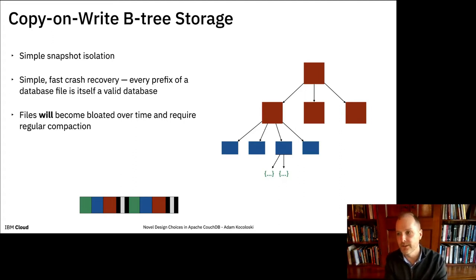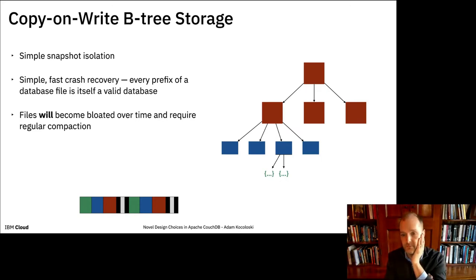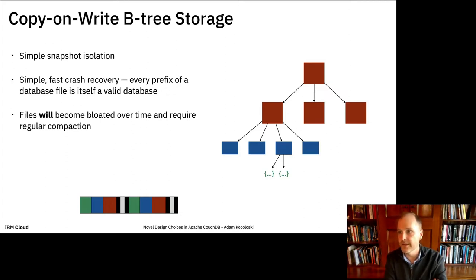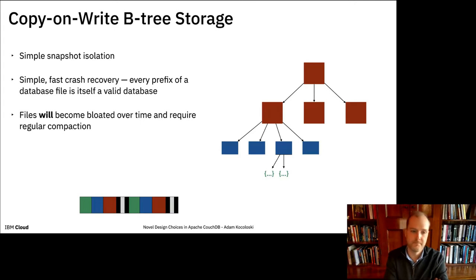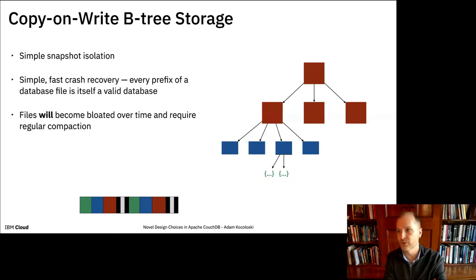If I have a random update pattern across random primary keys, I'm rewriting B-tree nodes very frequently. The pure append-only nature of this means old nodes referred to by an earlier database header continue to exist in the file in perpetuity. So we have to have a vacuuming process that takes all entries accessible from the latest database header, writes them to a new file, and drops the old one — on a fairly regular basis. It's a good trade-off, but it meant spending a lot of time optimizing that process to stay ahead of any real write workload.